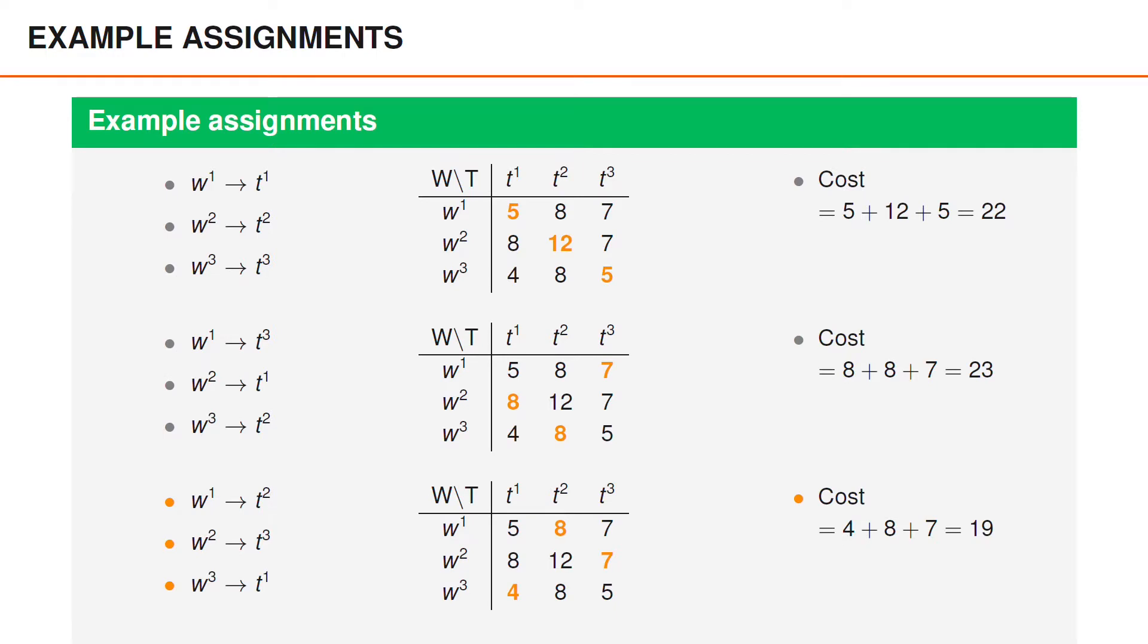And a third assignment is that worker 1 solves task 2, worker 2 solves task 3, and worker 3 task 1. And this assignment has cost 19.